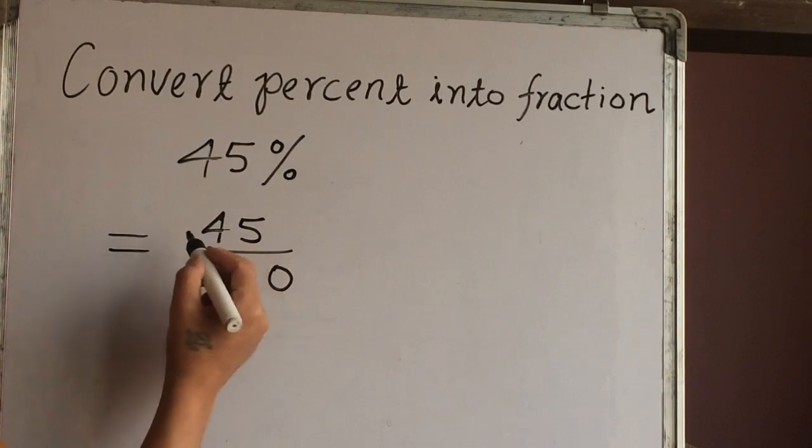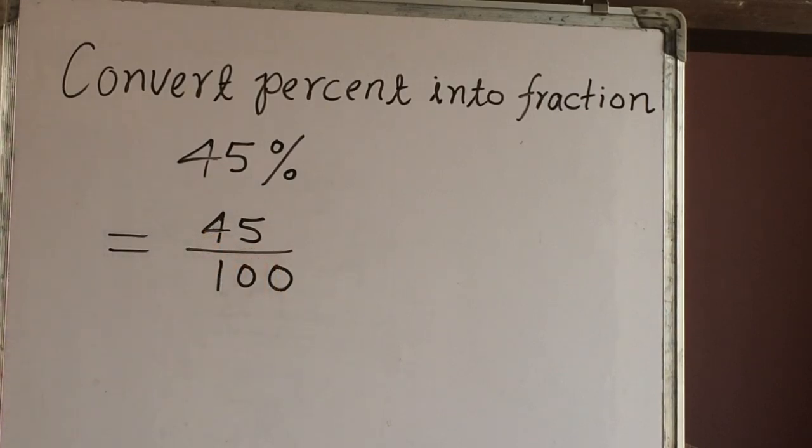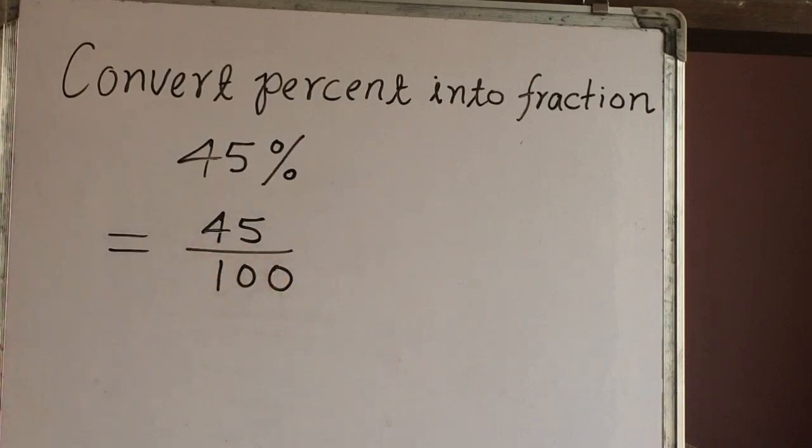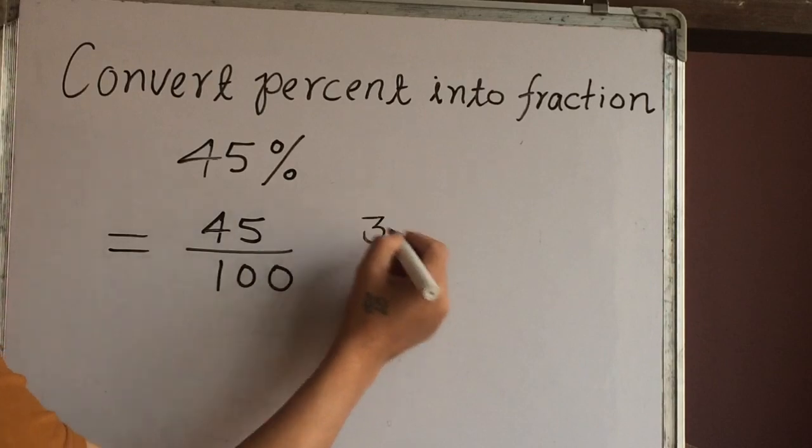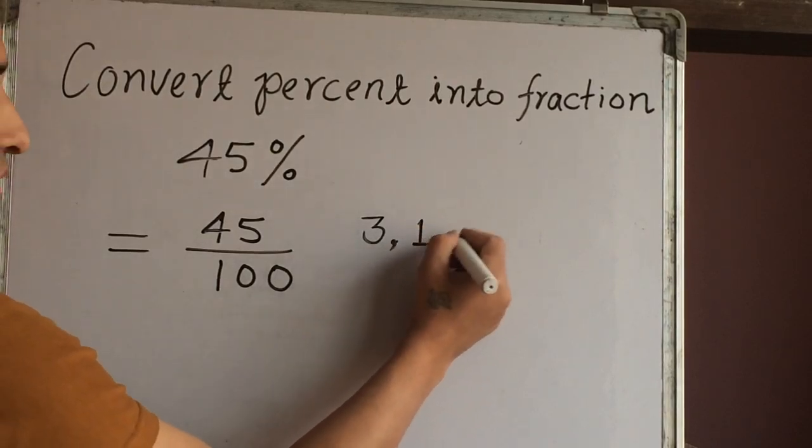So 45. What are all the possible factors of 45? We see 3 is a factor of 45 because 15 times 3 is 45. So we can write here 15 and 3.